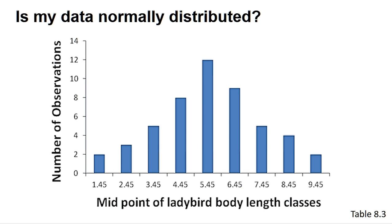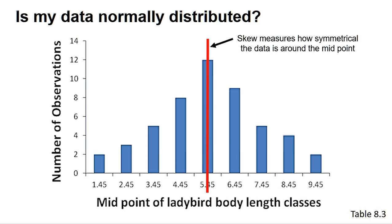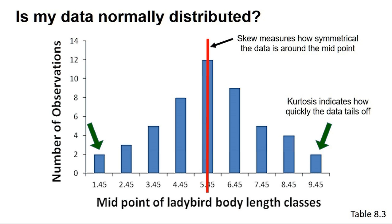Normal data sets are symmetrical, so we can look at the skew value, which should be zero for a perfectly symmetrical data set. This is also why we find the mean and median are the same in normally distributed data. In general, a skew value between minus 2 and 2 can be consistent with a normal distribution. We can also calculate a kurtosis value. In a normally distributed data set, the data tails off from the central position in a defined way. The kurtosis value can indicate if your data tails off too quickly or slowly. A kurtosis value between minus 2 and 2 can be consistent with a normally distributed data set.